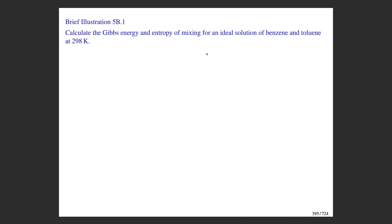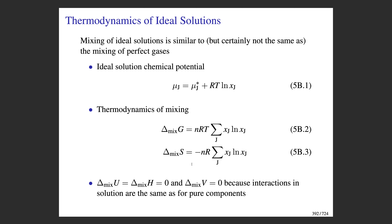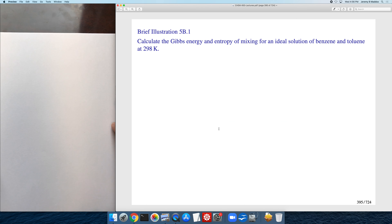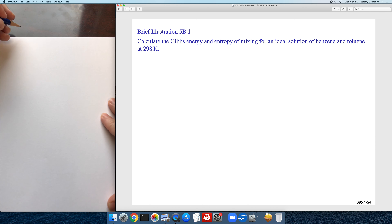Here we're asked to calculate the Gibbs energy and entropy change for mixing an ideal solution of benzene and toluene. It looks like the concentration was left off, so you might assume a 0.5 mole fraction mixture. I'm going to skip the details of the calculation, but you need to execute these two formulas—there'll be a term for benzene and a term for toluene. If you know the mole fraction of benzene, say x_B = 0.25, you can calculate the mole fraction of toluene.